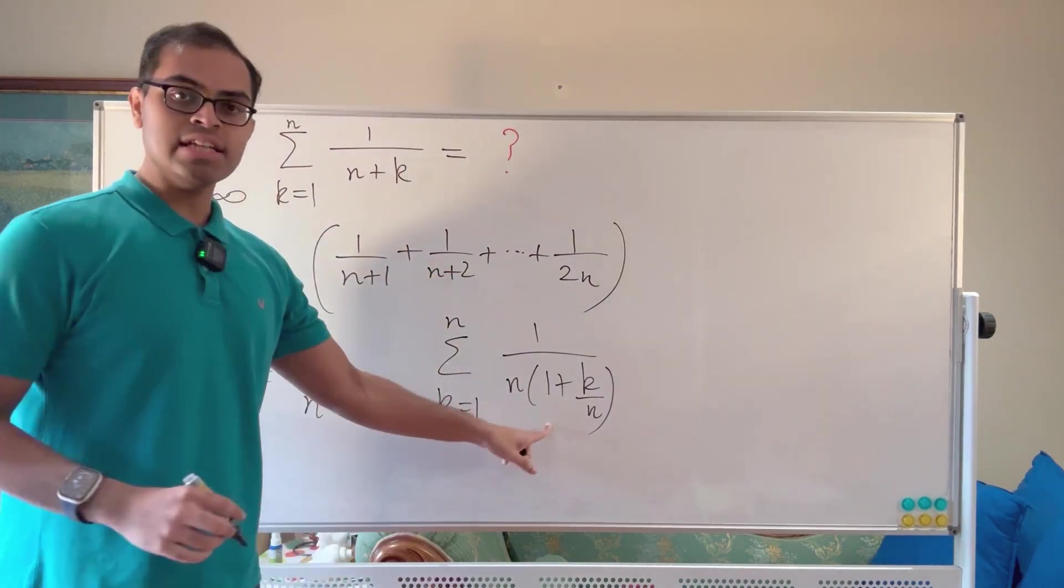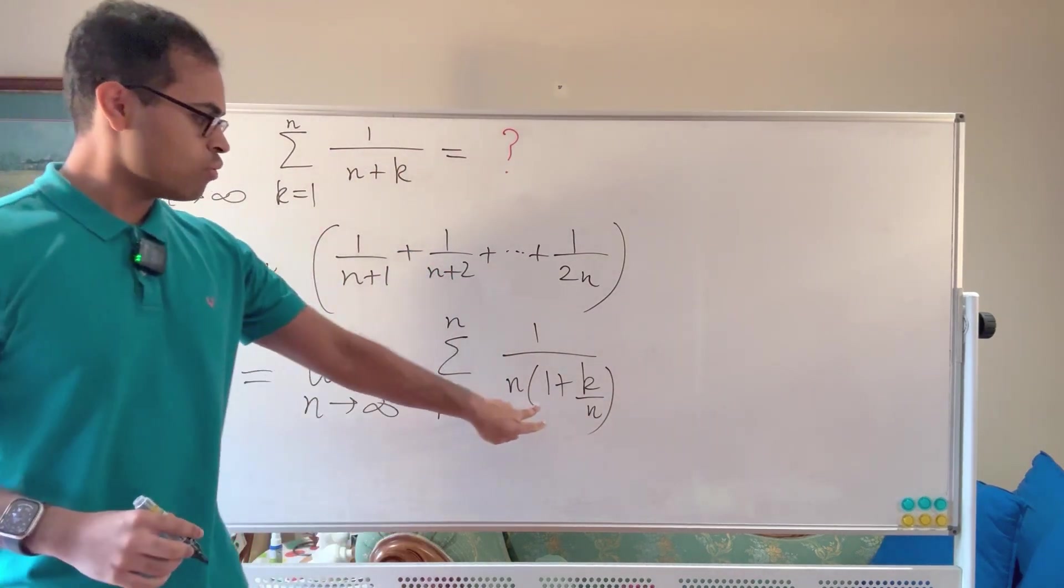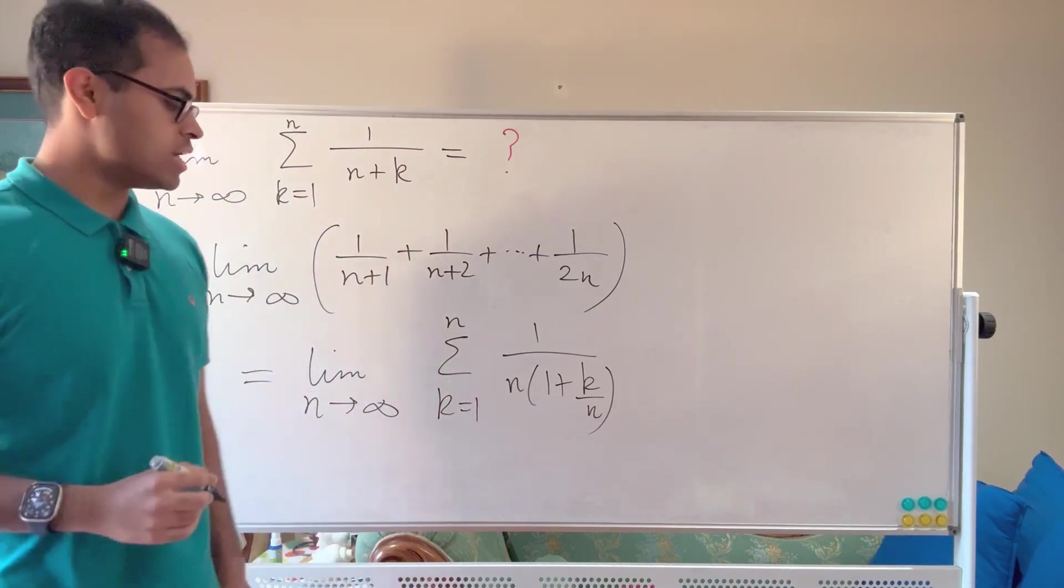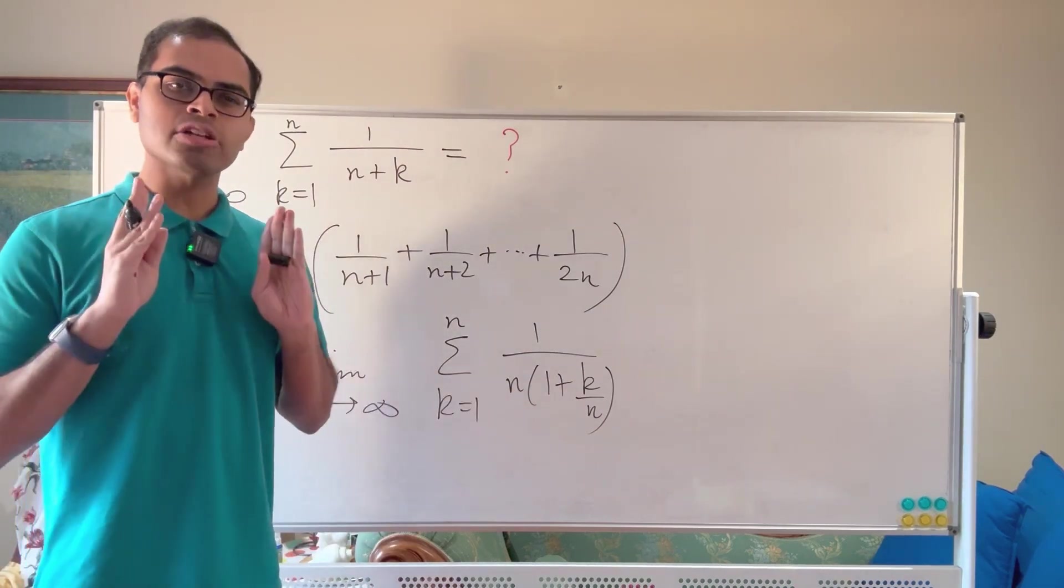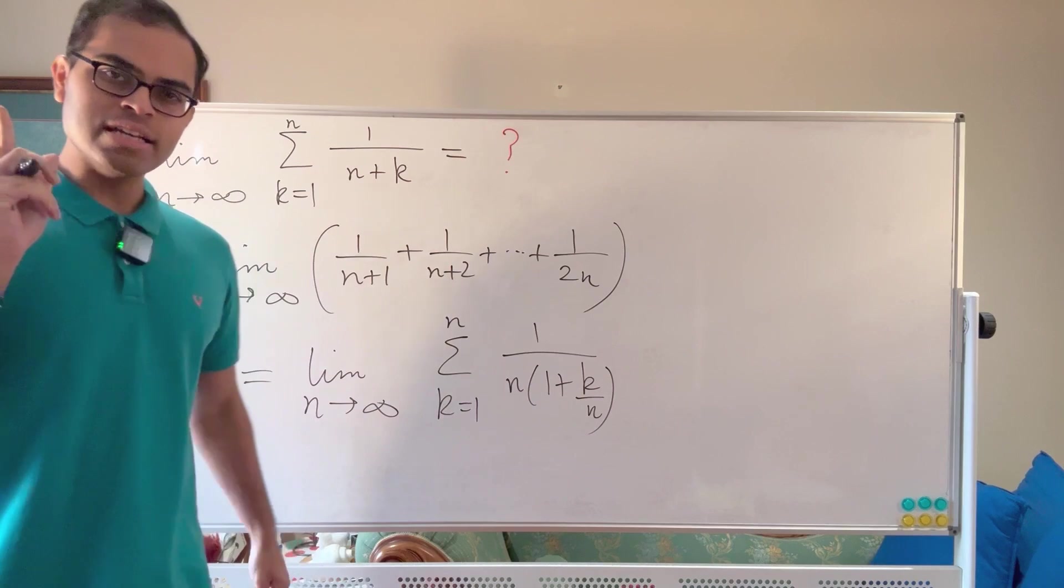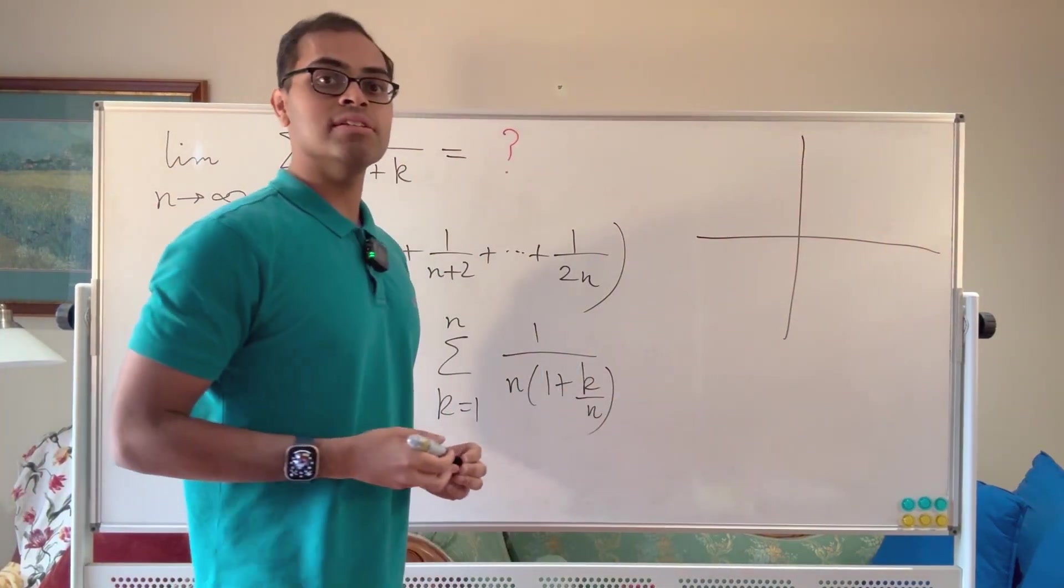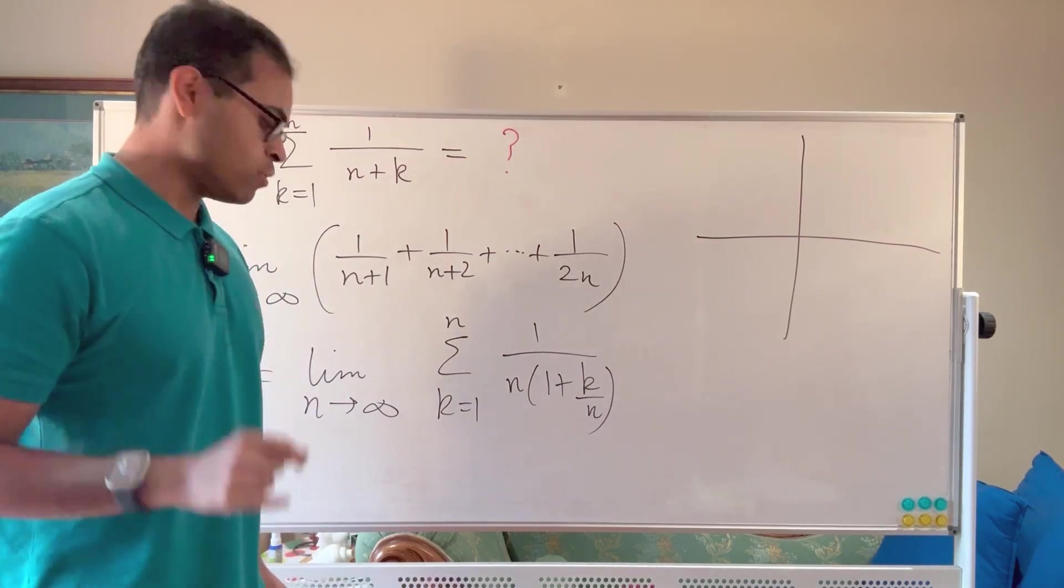So notice all I've done is I factored an n out from the denominator and I've got 1 plus k over n times n, which is of course n plus k on the denominator. But this sum now actually has a lot of meaning. And to understand that meaning, I'm going to draw a very beautiful graph of a function that we all see very early, which is the hyperbola.